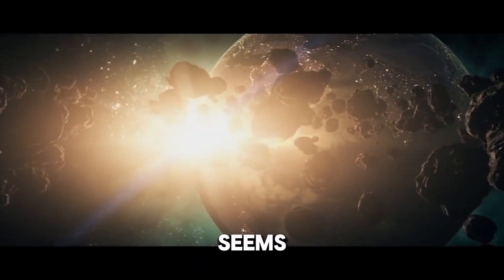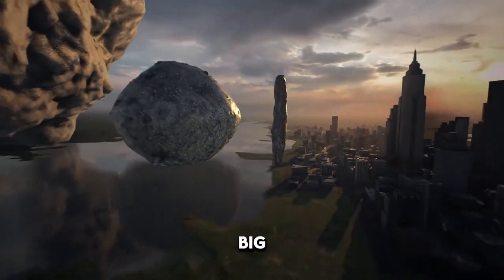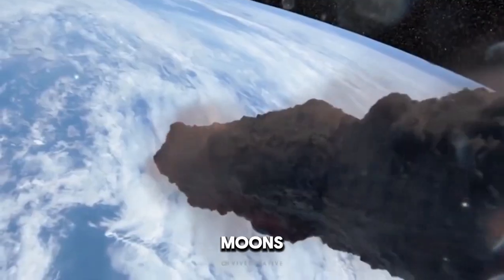Kepler-62e seems to have a cloudy sky, but that doesn't stop it from having warm and humid weather, even at the North and South Poles, akin to living in a tropical paradise.